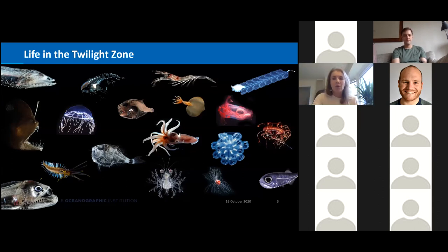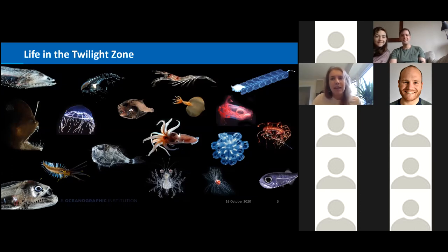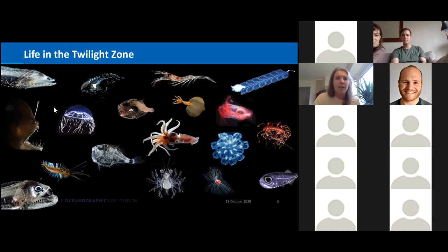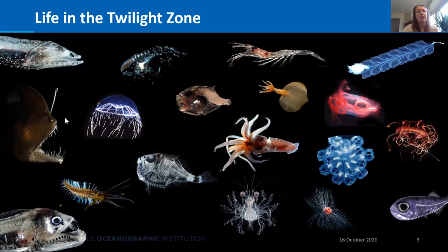The twilight zone is home to a host of different organisms, and by some estimates there may be as many as one million yet undiscovered species. Here you can see a few pictures taken as part of the twilight zone project at WHOI showing the different life you can find there — fish, crustaceans, gelatinous organisms like jellyfish — all with really different adaptations and a lot of bioluminescence to live in this interesting environment.